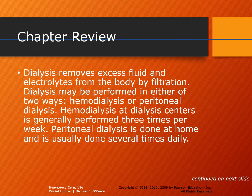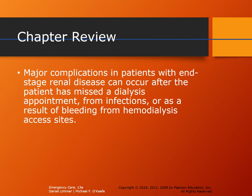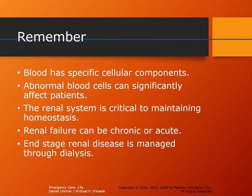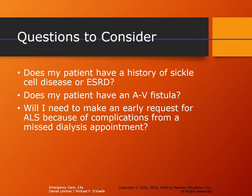Renal system issues include infection, kidney stones, renal failure, and other conditions. These failures can result in the need for hemodialysis or peritoneal dialysis. Dialysis removes excess fluid and electrolytes by filtration — hemodialysis is the most common form, done at dialysis centers three times per week, while peritoneal dialysis is typically done at home several times daily. Complications with ESRD can occur after missing dialysis appointments, from infections, or from complications at hemodialysis access sites.